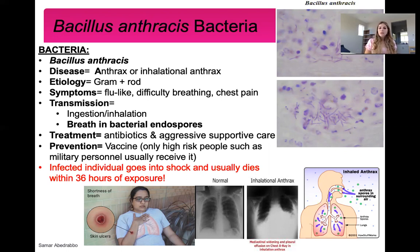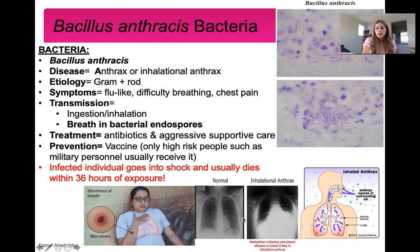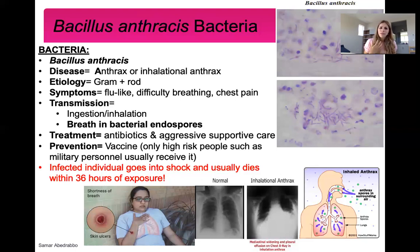Treatment is antibiotics and aggressive supportive care — ensuring the patient can breathe and has good oxygenation. There is a vaccine, but only high-risk individuals such as military personnel receive it because the disease is not common. Here is an image of a lung sample showing gram-positive, rod-shaped bacteria. Comparing a normal chest X-ray to one showing inhalational anthrax, you can see severe inflammation caused by the immune system fighting the infection — and it is that inflammation that makes breathing so difficult.